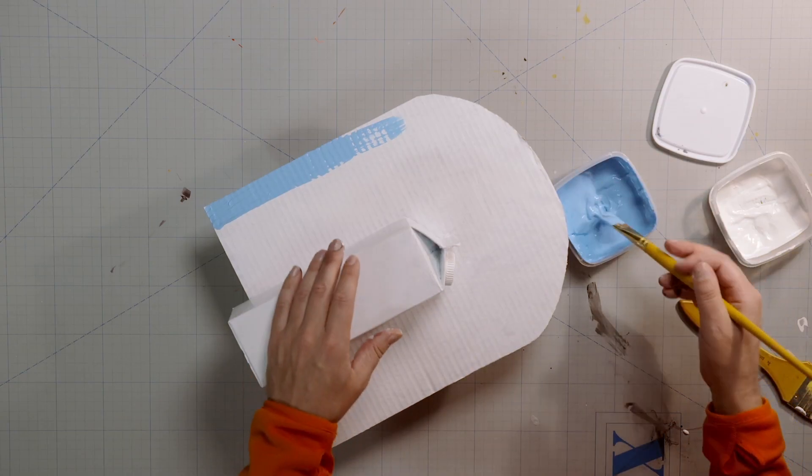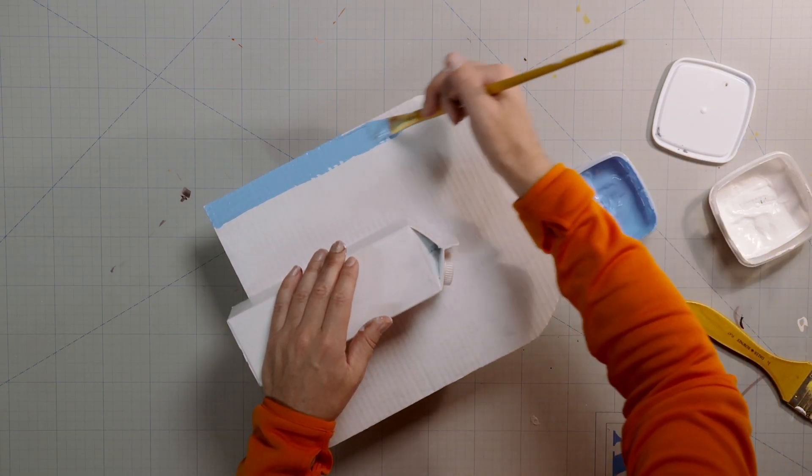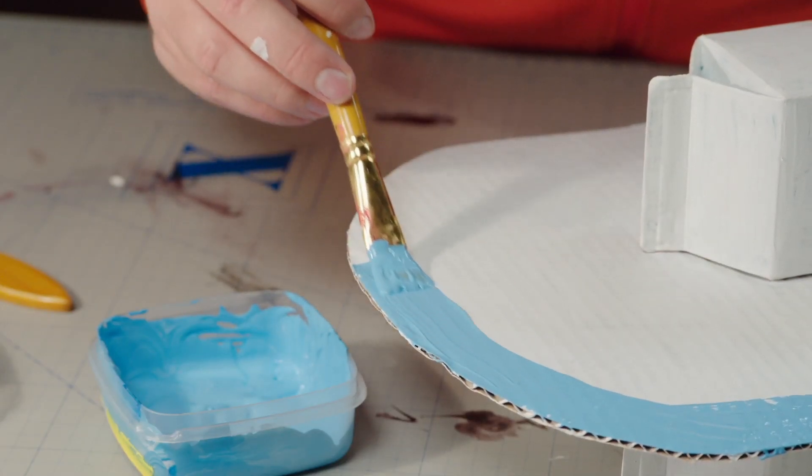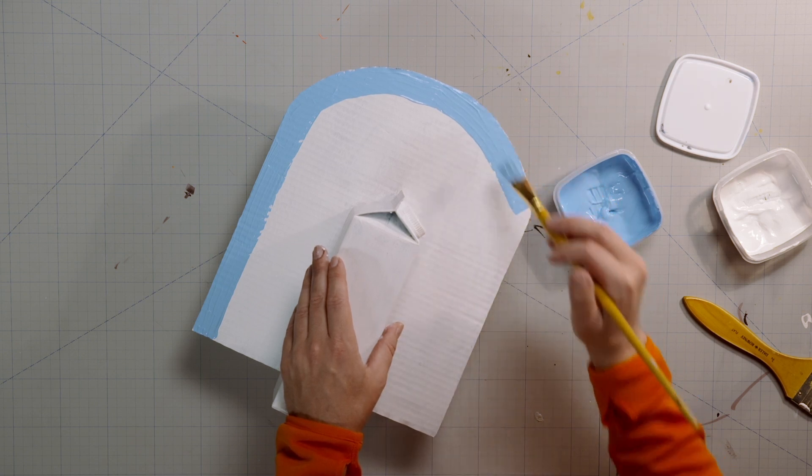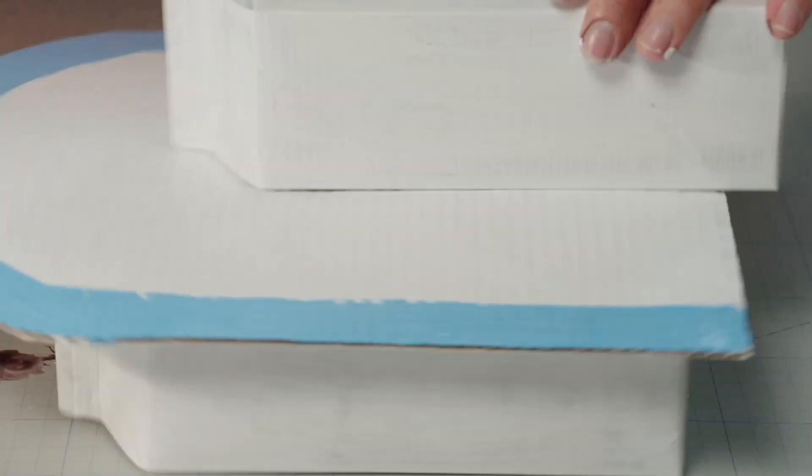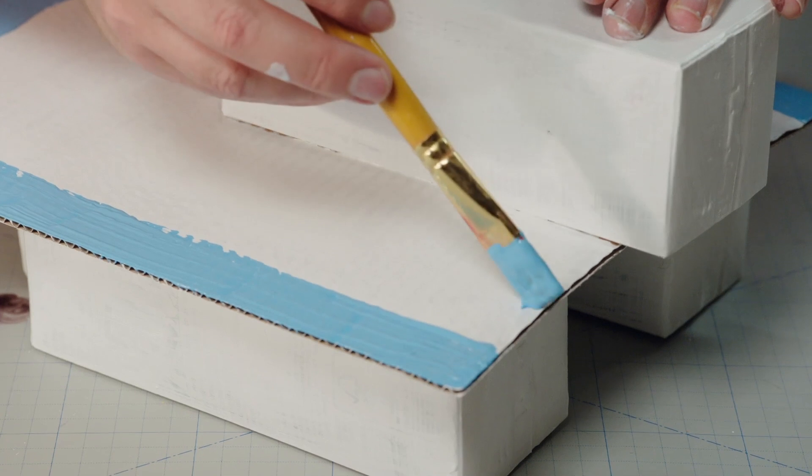You can choose whatever patterns and decorations you want on your own boat. But my tip is that you start with a clean, crisp white base. Now, paint two more lines on the sides of the deck.